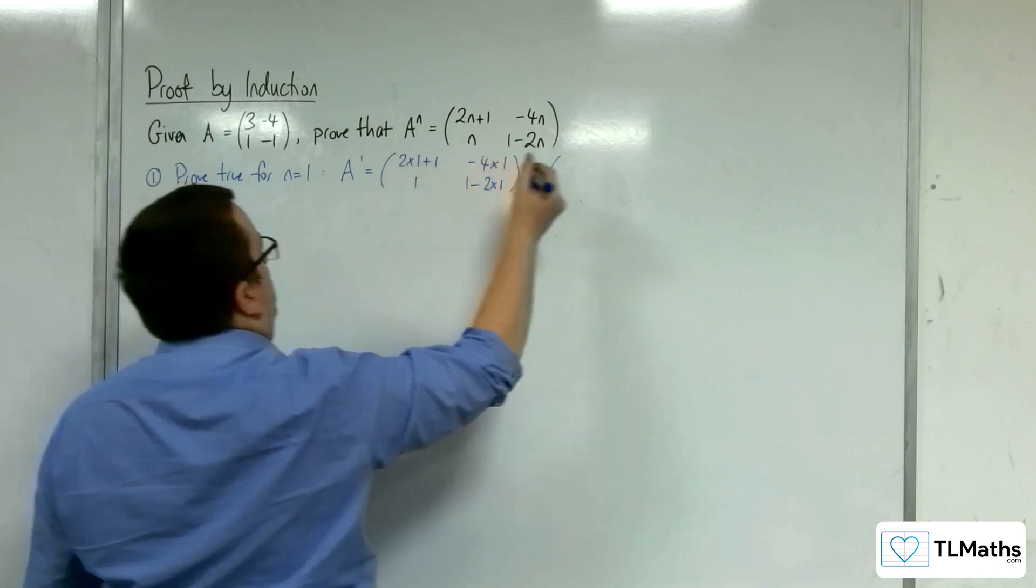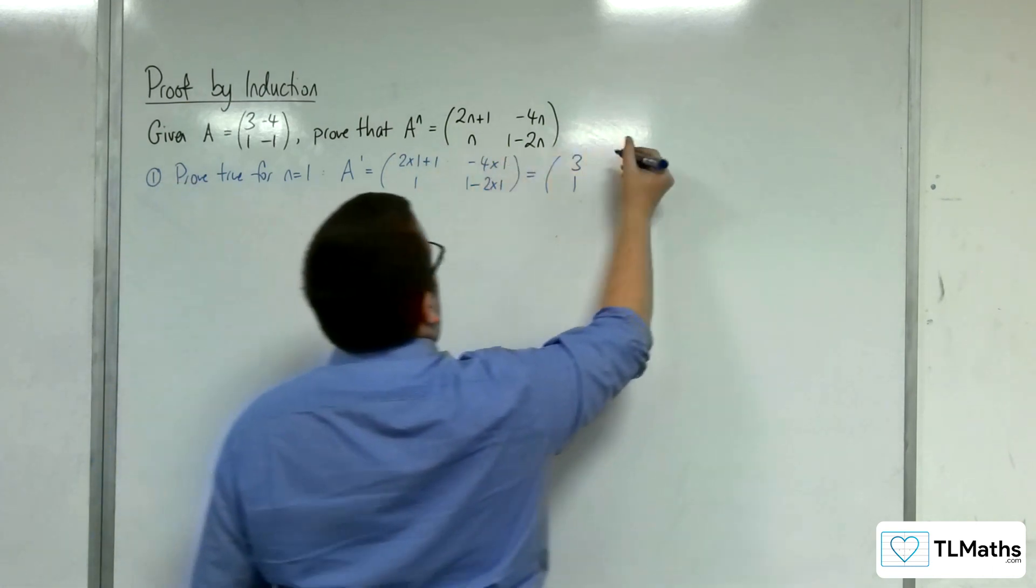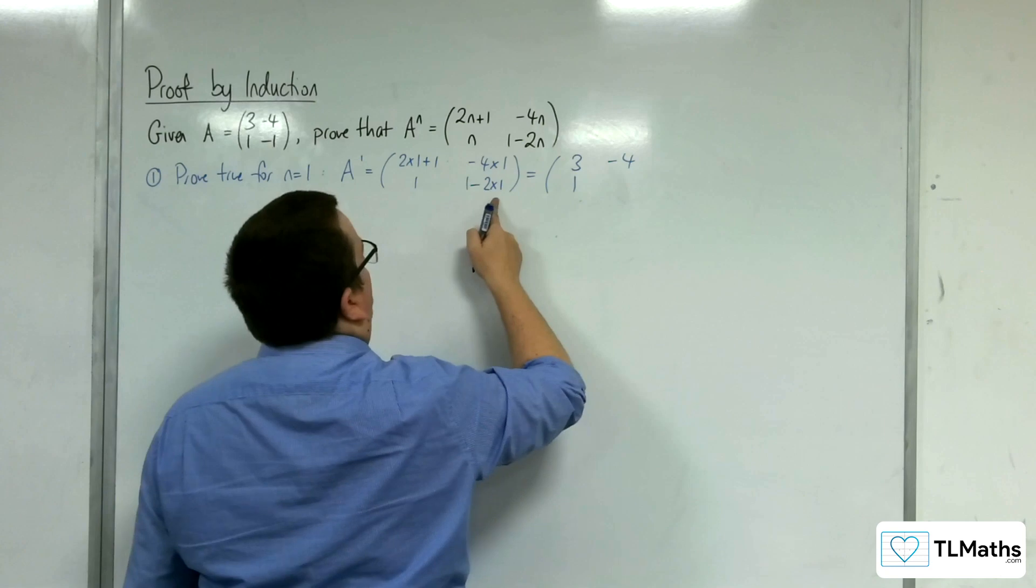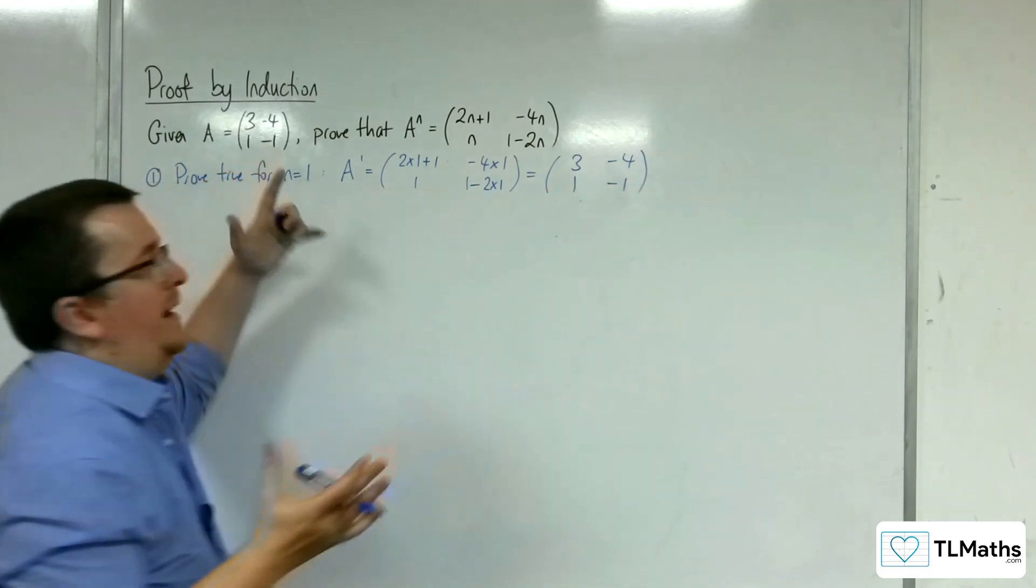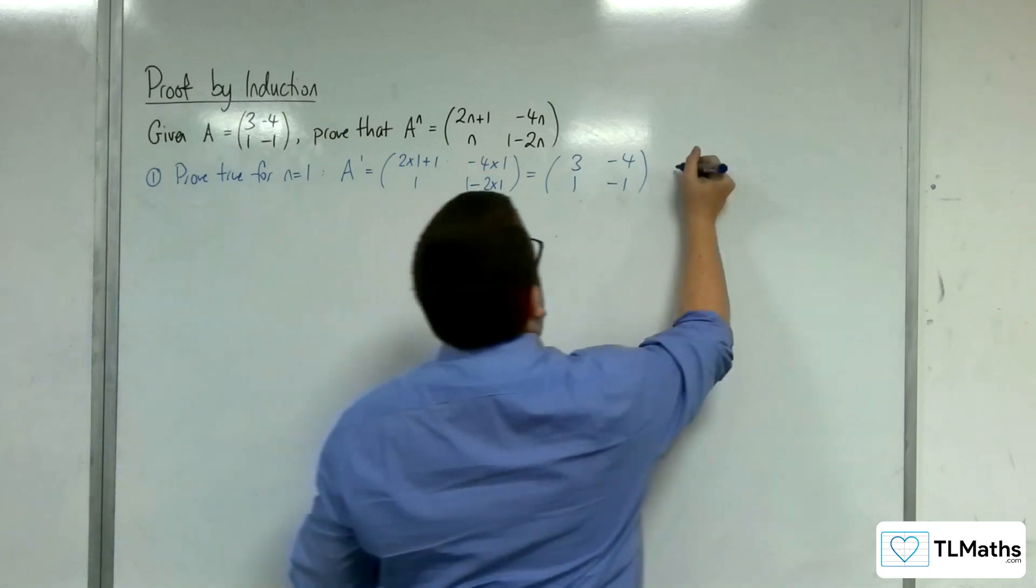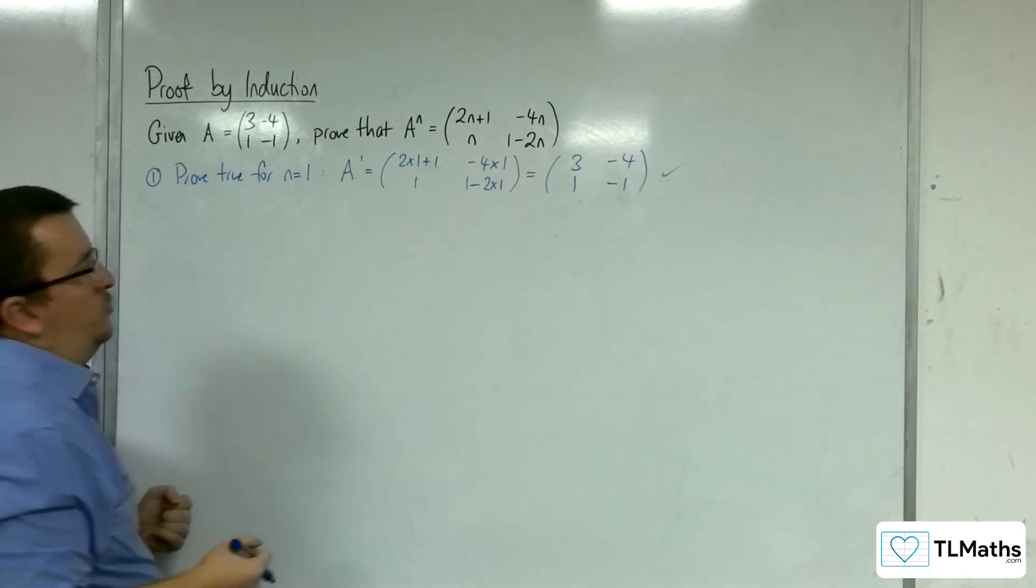So 2 plus 1 is 3, we've got the 1 there, we get the minus 4 there, and we've got 1 take away 2, so negative 1. And this matches up perfectly with the A that we had previously in the question. So that's perfectly true.